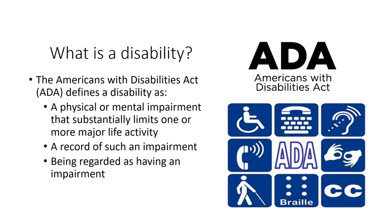We are going to start off this workshop by talking about what exactly a disability is, as defined by the Americans with Disabilities Act that was amended in 2008. According to the ADA, a disability is a physical or mental impairment that substantially limits one or more major life activities, a record of such an impairment, or being regarded as having such an impairment. But what exactly does that mean?